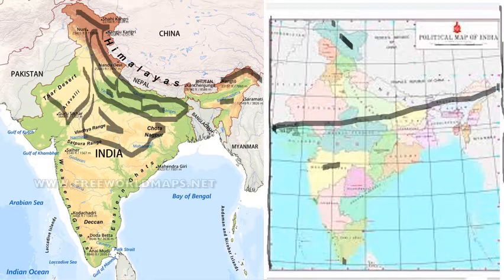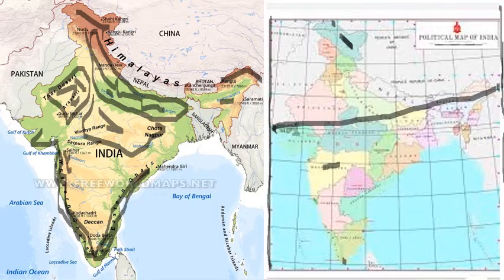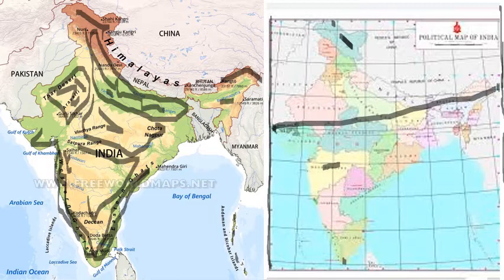The great Indian desert, most of it in Rajasthan, is another geographical region of India. We also have the western coastal plains and the eastern coastal plains, which are comparatively fertile regions. In between the western and eastern coastal plains and the Western and Eastern Ghats, we have the great Indian plateau. The sixth geographical region is the islands in the Bay of Bengal, known as Andaman and Nicobar Islands, and the islands in the Arabian Sea, known as Lakshadweep Islands.